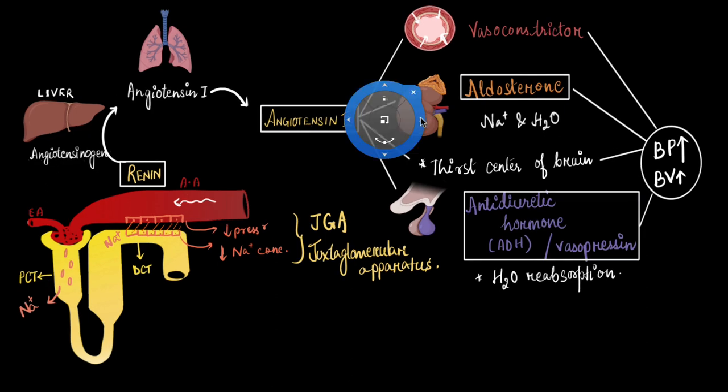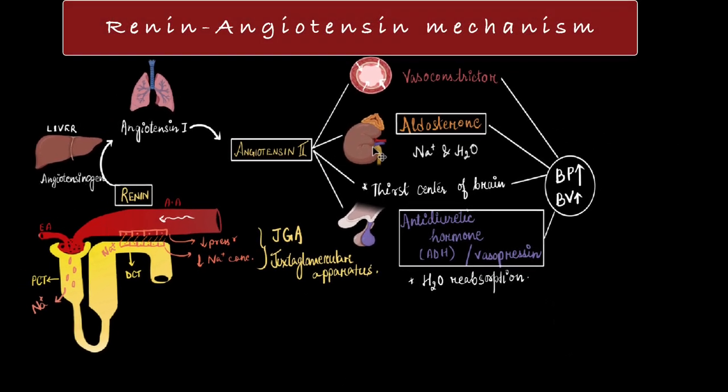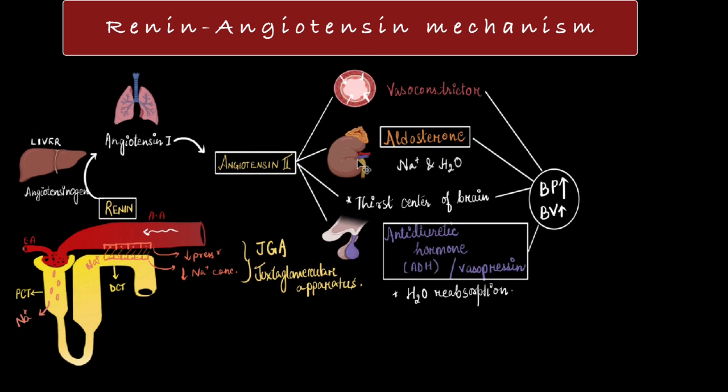And this wonderful inbuilt mechanism of the body is called the renin-angiotensin mechanism, or sometimes the renin-angiotensin-aldosterone mechanism. Now let's imagine that the bleeding person received medical help. His bleeding has stopped and he is out of danger now.